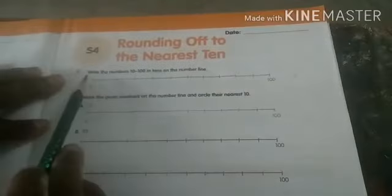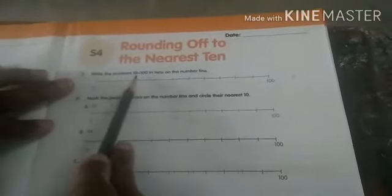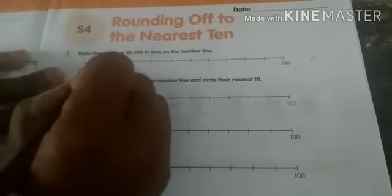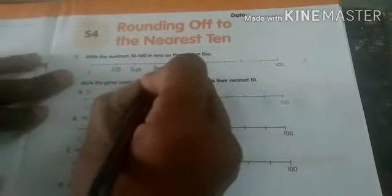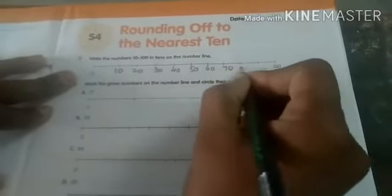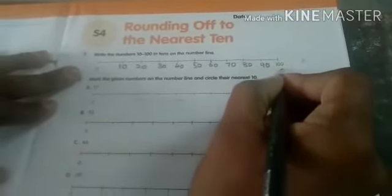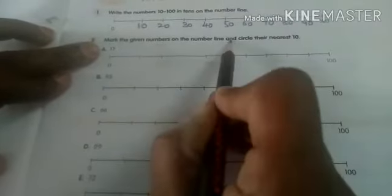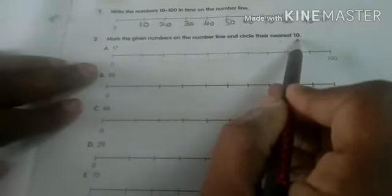Children, page number 16, S4. Write today's date. First bit, write the numbers 10 to 100 in 10s on the number line. 0 you have given children. Now you have to write 10, 20, 30, 40, 50, 60, 70, 80, 90, 100 children. Now second bit, mark the given numbers on the number line and circle their nearest 10 children. As this way you have to write here same.